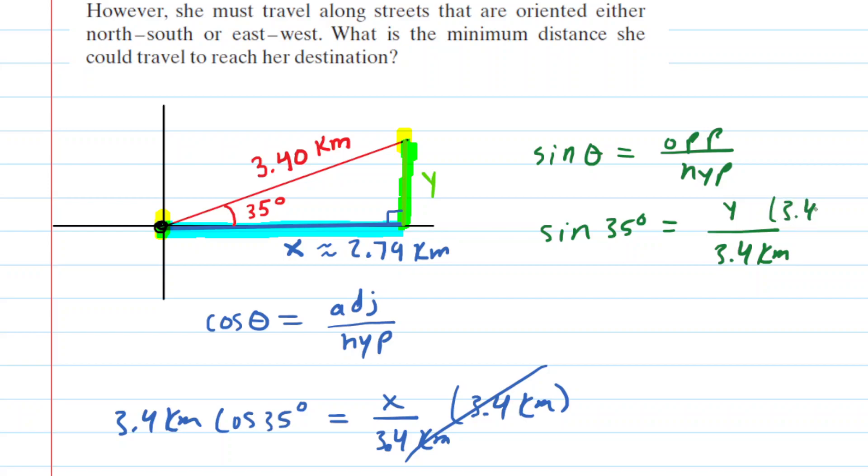Once again, we just have to multiply both sides by the 3.4 kilometers, so it cancels out on the right-hand side. And 3.4 kilometers times the sine of 35 is about 1.95. So now we know that y is equal to about 1.95 kilometers.